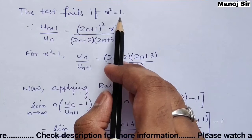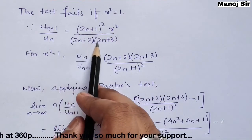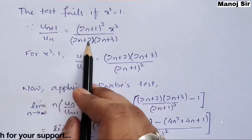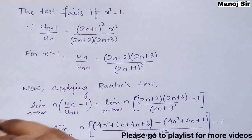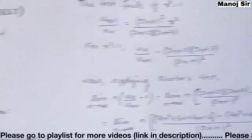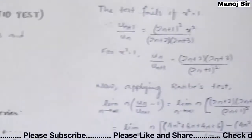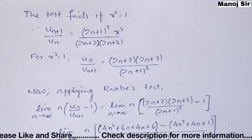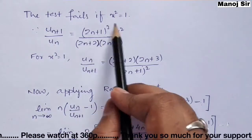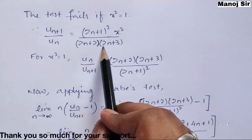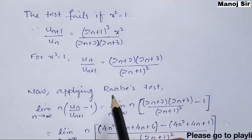When x² = 1, we have un+1/un = (2n+1)² / [(2n+2)(2n+3)]. For Raabe's test we need un/un+1, which is the reciprocal: un/un+1 = (2n+2)(2n+3) / (2n+1)².